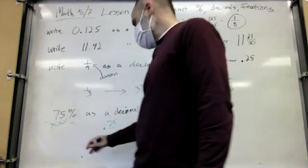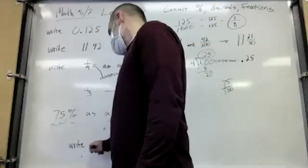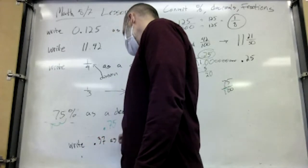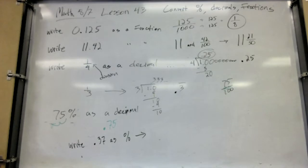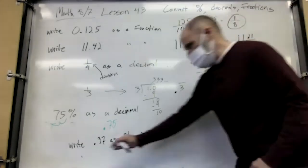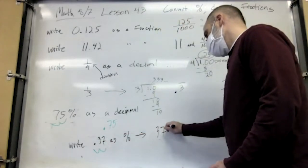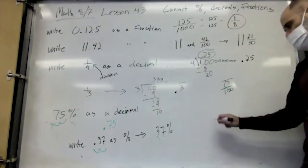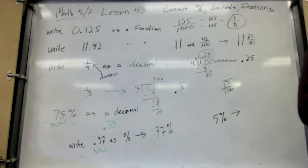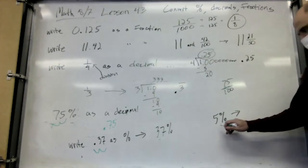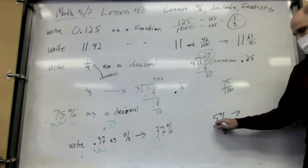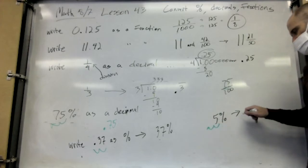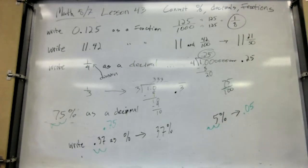So 75% becomes 0.75. Let's go the other way — write 0.37 as a percent. 37%. You're just moving the decimal over two places. Now if you're going to be tricked, it'll be like this: how do you write 5% as a decimal? It's 0.05. You need another zero there because you have to go two places. So single-digit percents have a zero in front — 9% is 0.09.